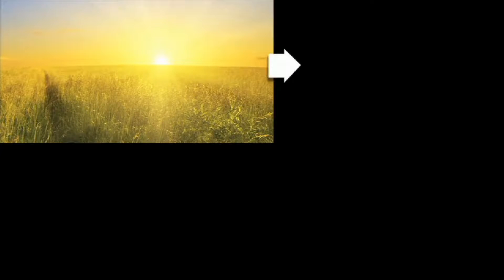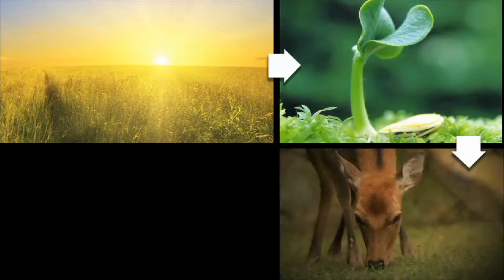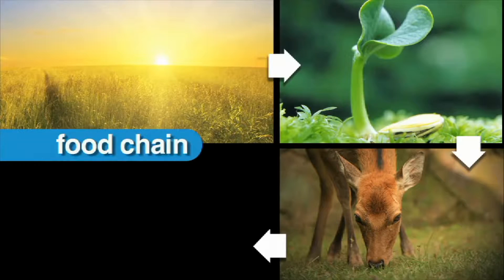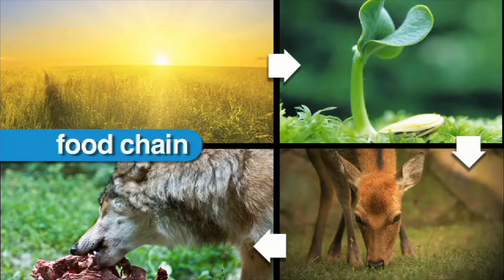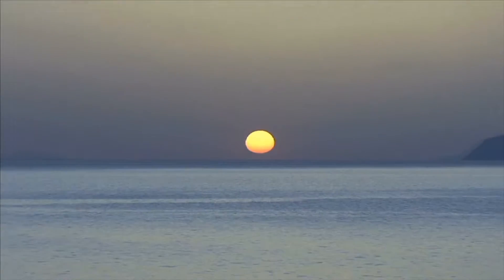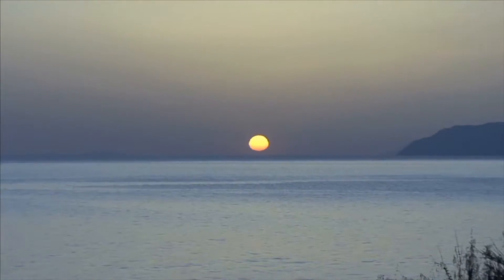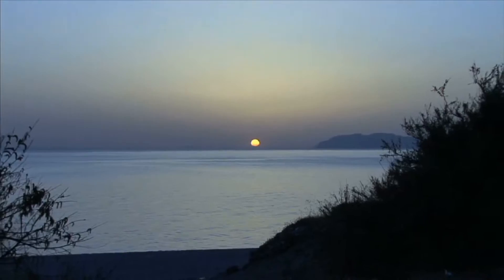To better understand how organisms get energy, we use a food chain. A food chain shows the relationship between the plants and animals in an ecosystem. All food begins with the sun. The sun provides energy for everything on our planet.